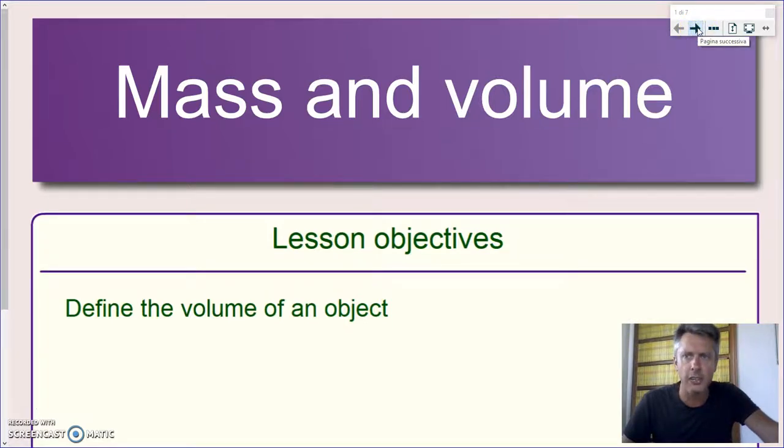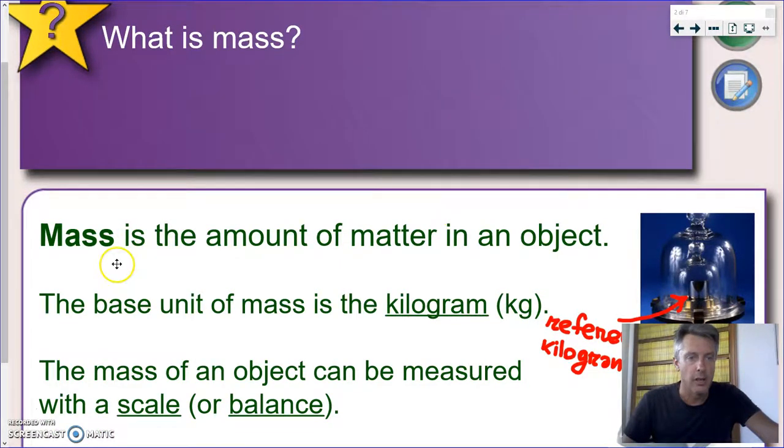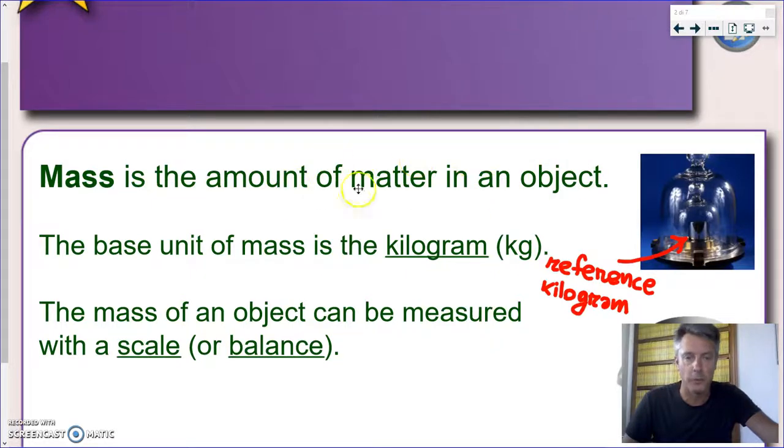But let's start with the definition of mass. So what is mass? This is one of the most important and usually most misunderstood concepts in early physics. Mass is defined as the amount of matter in an object, and we're going to see more in detail what that means.